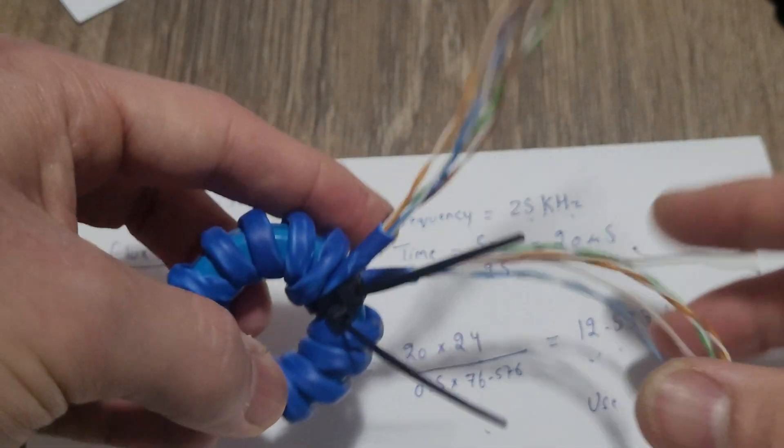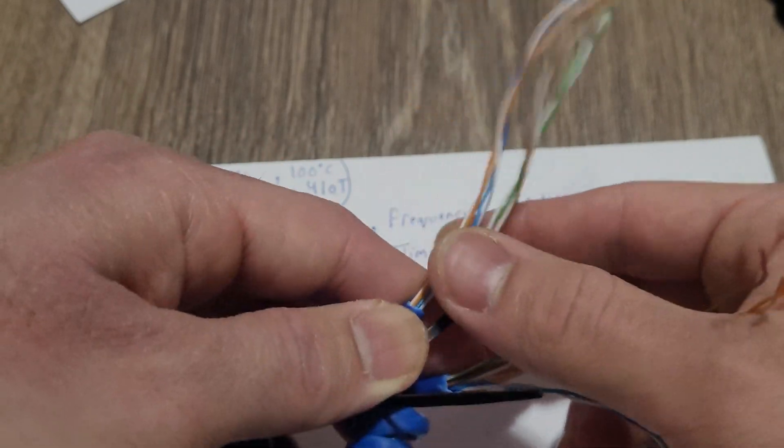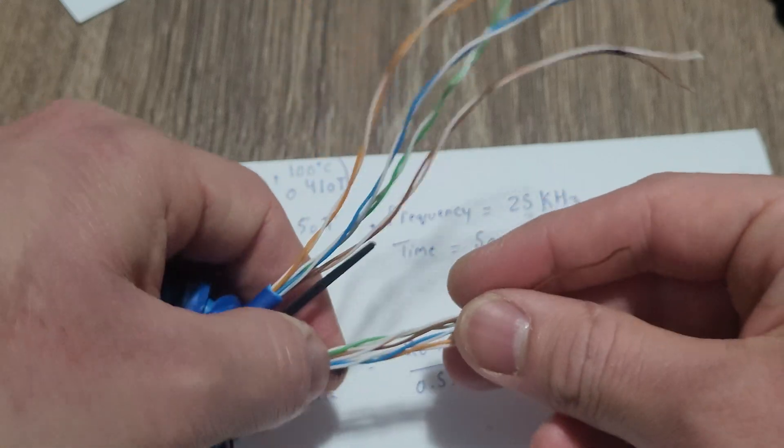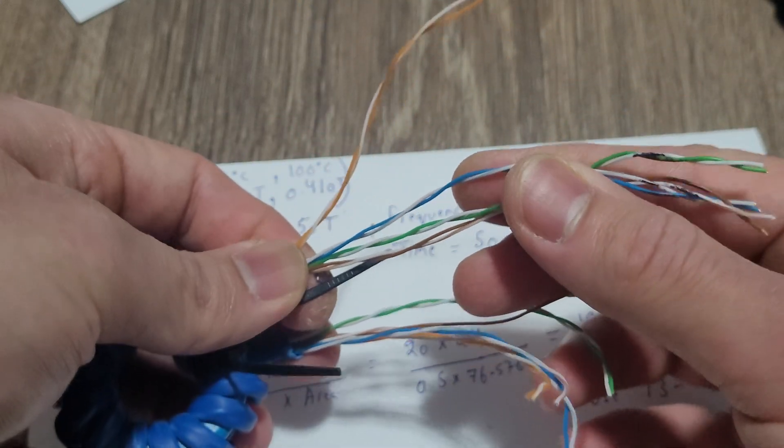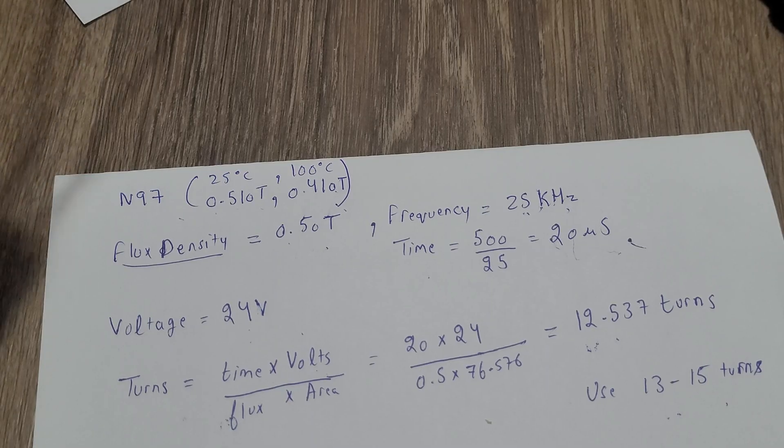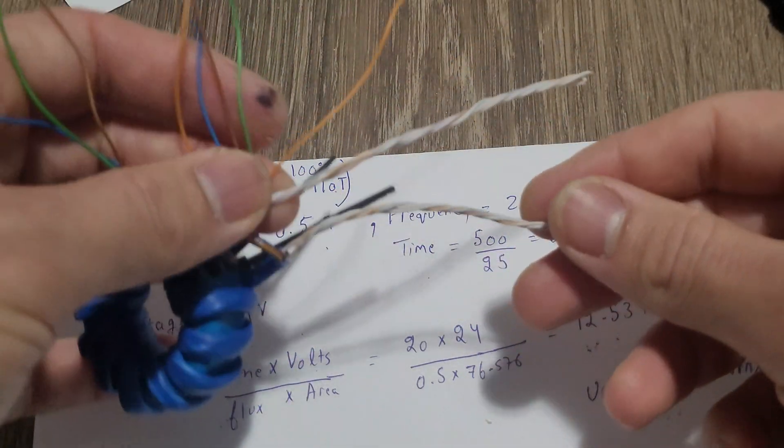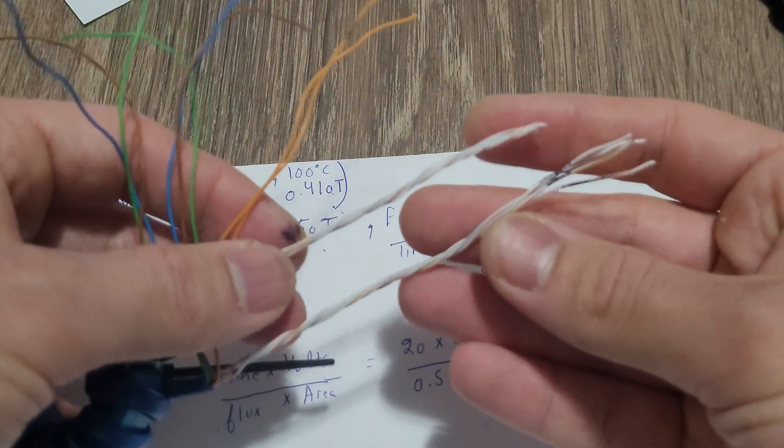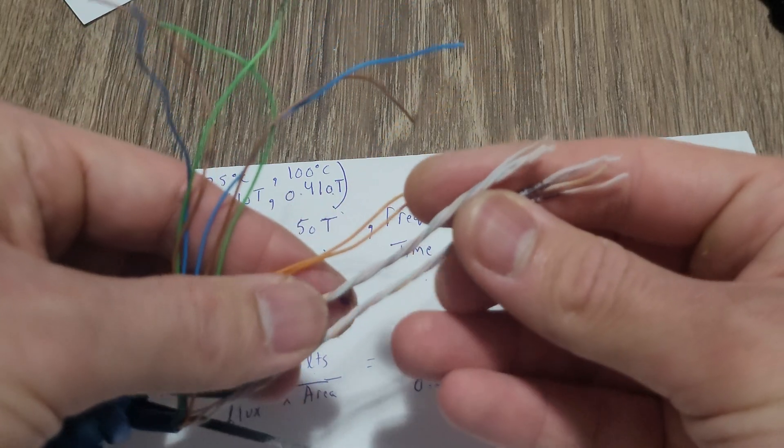All right, so now what I'm gonna do is separate all the white light colored wires from the dark colored wires. So this is what it looks like. This will be your primary, so all the light colored wires twisted together.